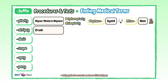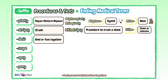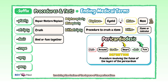"-Tripsy" is for crush. We have lithotripsy, which recalls "litho" for stone or calculus. So lithotripsy is a procedure to crush a stone such as a kidney stone. "-Desis" means to bind or fuse together. Pericardiodesis is a great example: "peri" is a prefix for around, "cardio" is a root word for heart, and "-desis" means to bind or fuse together. So pericardiodesis is a procedure involving the fusion of the layers of the pericardium, the membrane enclosing the heart.